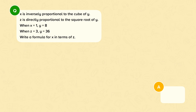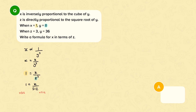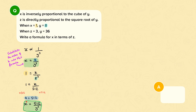Let's start with X and Y. X is inversely proportional to the cube of Y, so X equals K divided by Y cubed. Substituting the values, we get 1 equals K divided by 8 cubed, so 1 equals K divided by 512. Multiplying both sides by 512, K equals 512. Our formula that links X and Y is therefore X equals 512 divided by Y cubed.